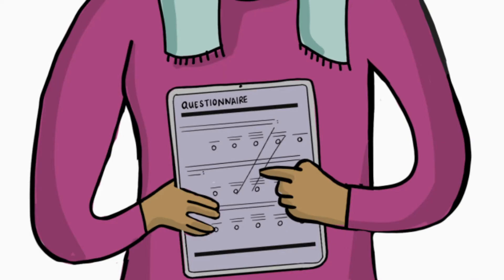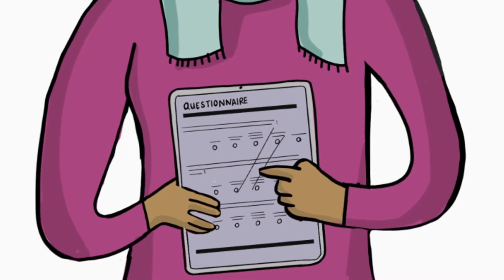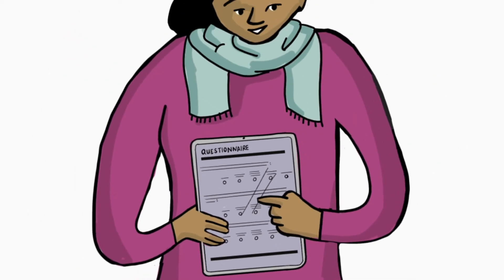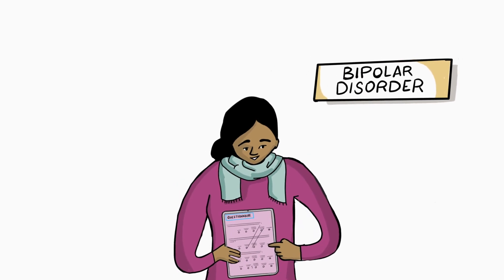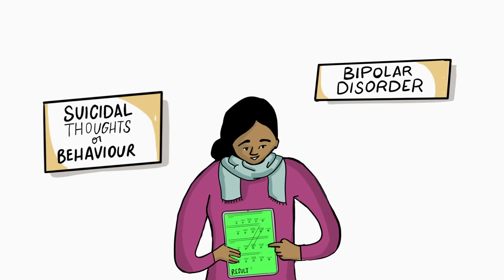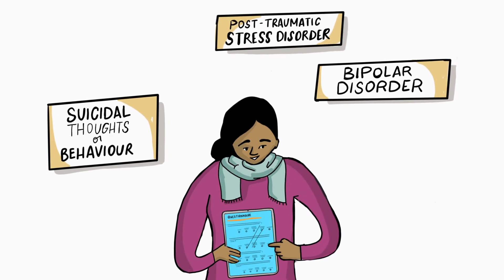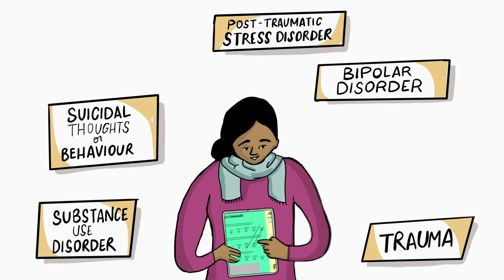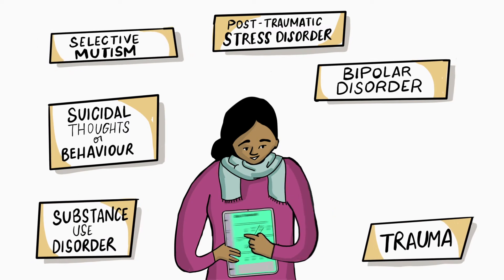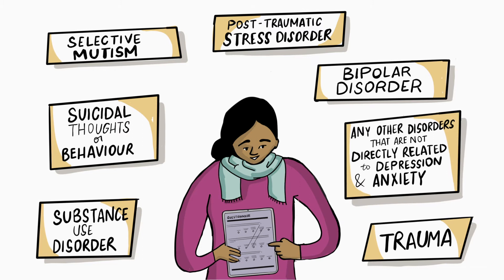There are some things the RCADS doesn't ask about. You may need to use additional questionnaires to assess for bipolar disorder, suicidal thoughts or behavior, post-traumatic stress disorder, substance use disorder, trauma, selective mutism, or any other disorders not directly related to depression and anxiety.